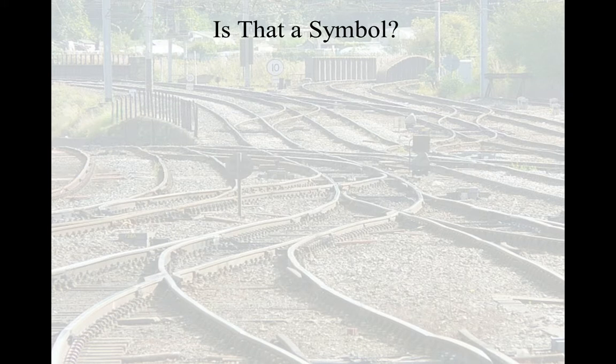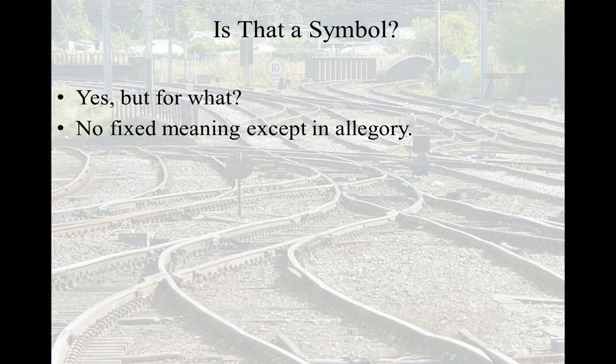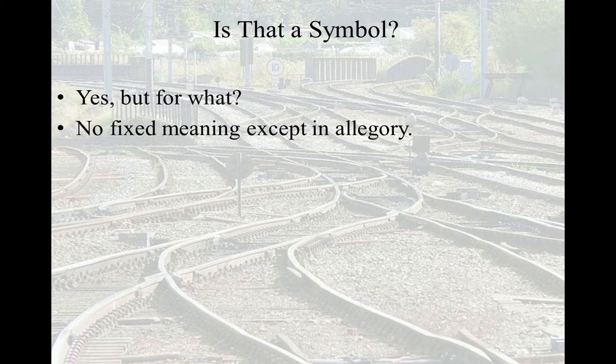One question we like to ask within literature is: is that a symbol? And often the answer is yes. But what kind of symbol is it? It's important to understand that symbols don't necessarily have fixed meanings — they change with time and culture. A good example is the peace sign hand gesture. In the United States, holding up two fingers outward means peace. In other cultures, that's the equivalent of giving someone the finger. Meanings aren't necessarily fixed, so we're continually trying to figure out what symbols are.